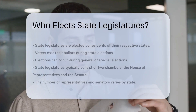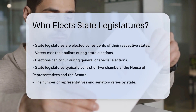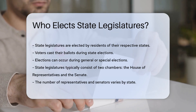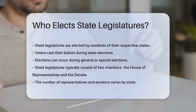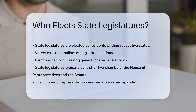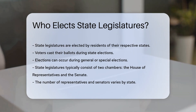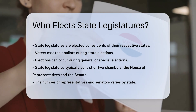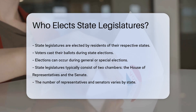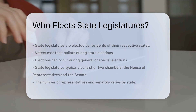State legislatures are elected by the residents of their respective states. Voters cast their ballots during state elections, which can occur during general elections or special elections. State legislatures typically consist of two chambers — the House of Representatives and the Senate. The number of representatives and senators varies by state.